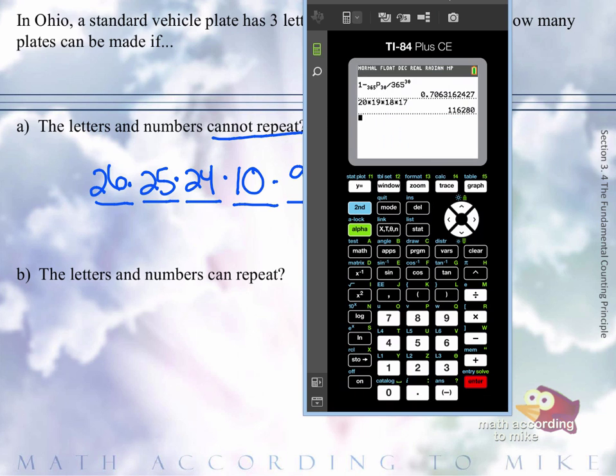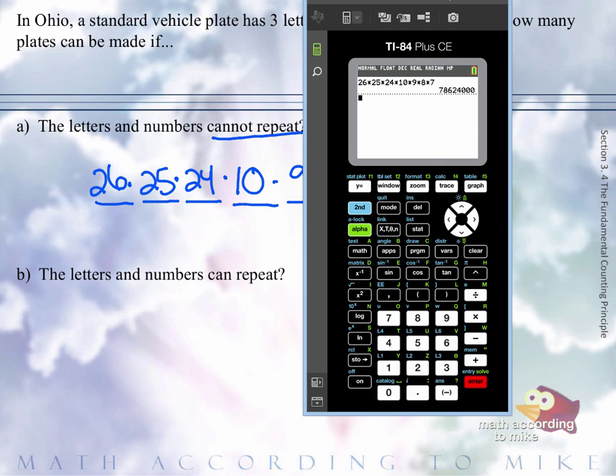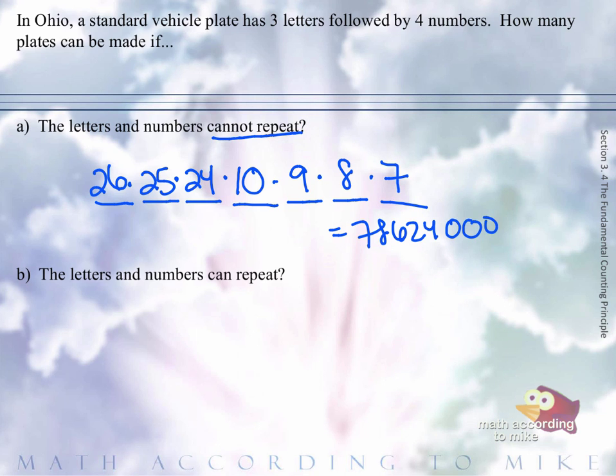So putting that in our trusty calculator. I can do this. I believe in myself. Nailed it. 7, 8, 6, 2, 4. And I think there were three zeros. So 78,624,000. Boom.